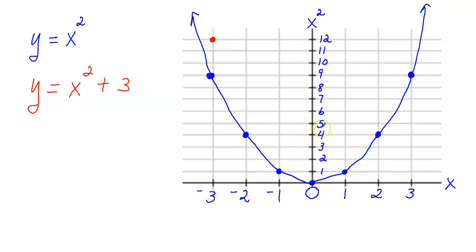This x squared value is 4. What's 4 plus 3? That's 7, so this translates up to 7. And this x squared value is 1 — 1 plus 3 is 4. So you can see I'm just translating each point up 3 units.